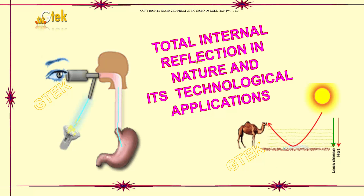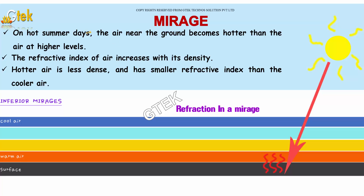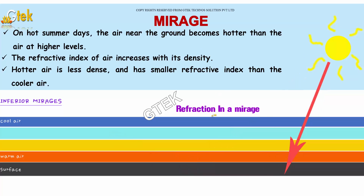Total internal reflection in nature and its technological applications. On hot summer days, the air near the ground becomes hotter than the air at higher levels. Using this concept, we are going to talk about the concept of mirage — how refraction and mirage occur once sunlight passes over the surface.